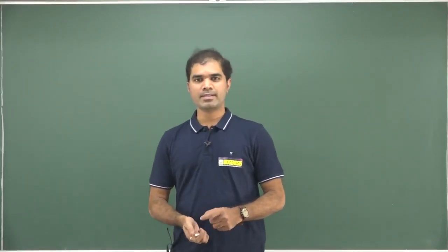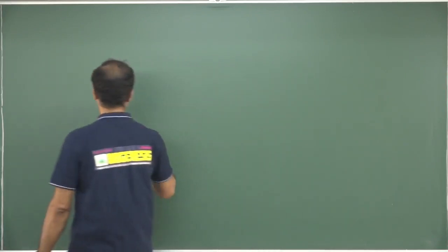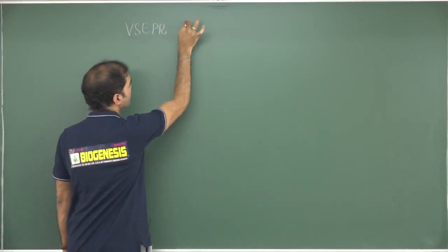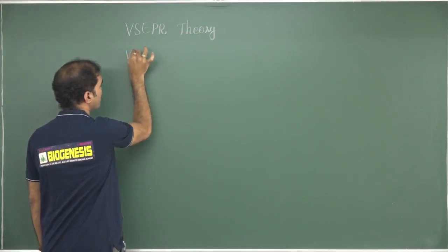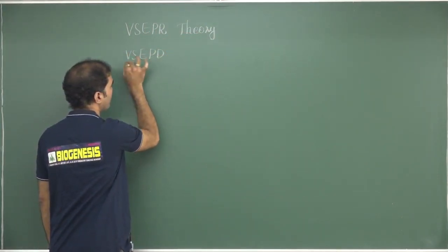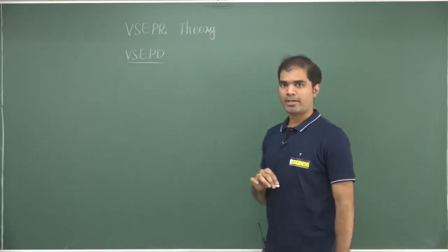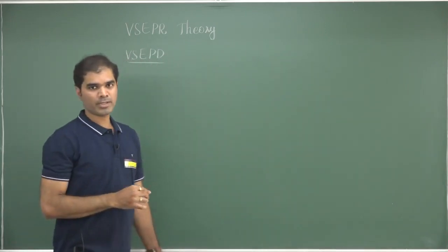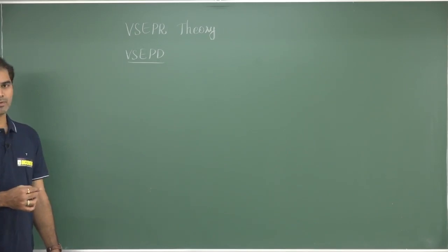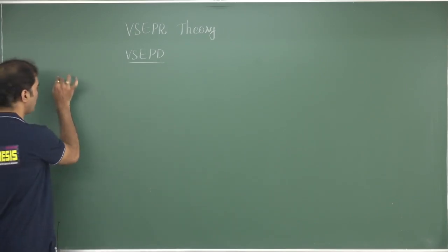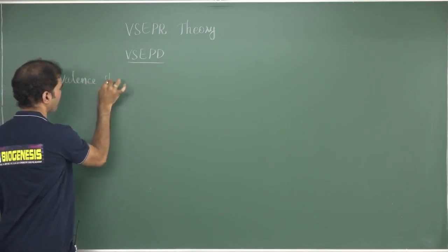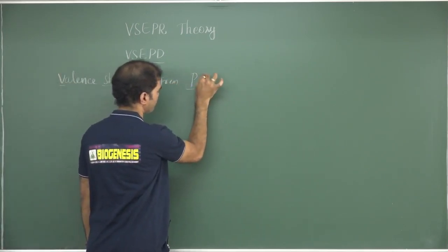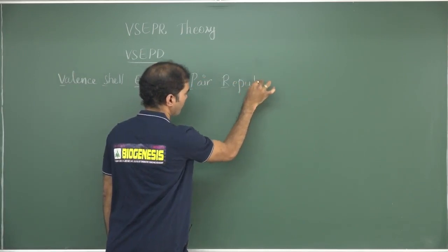Hello, everyone. Let us discuss a very important topic from the basics of inorganic chemistry, and that is VSEPR theory. You also have another name for it, which is called VSEPD theory. VSEPR is abbreviated as Valence Shell Electron Pair Repulsion Theory. It is one of the basic topics and almost every chemistry student will be knowing it.